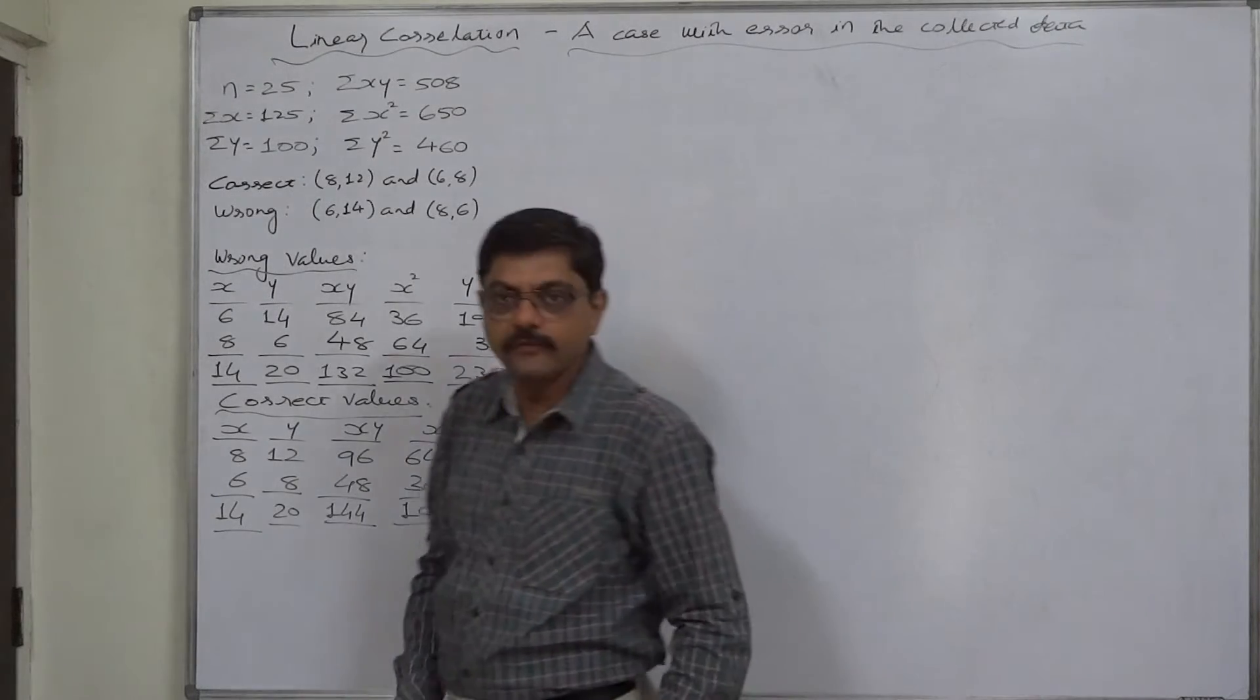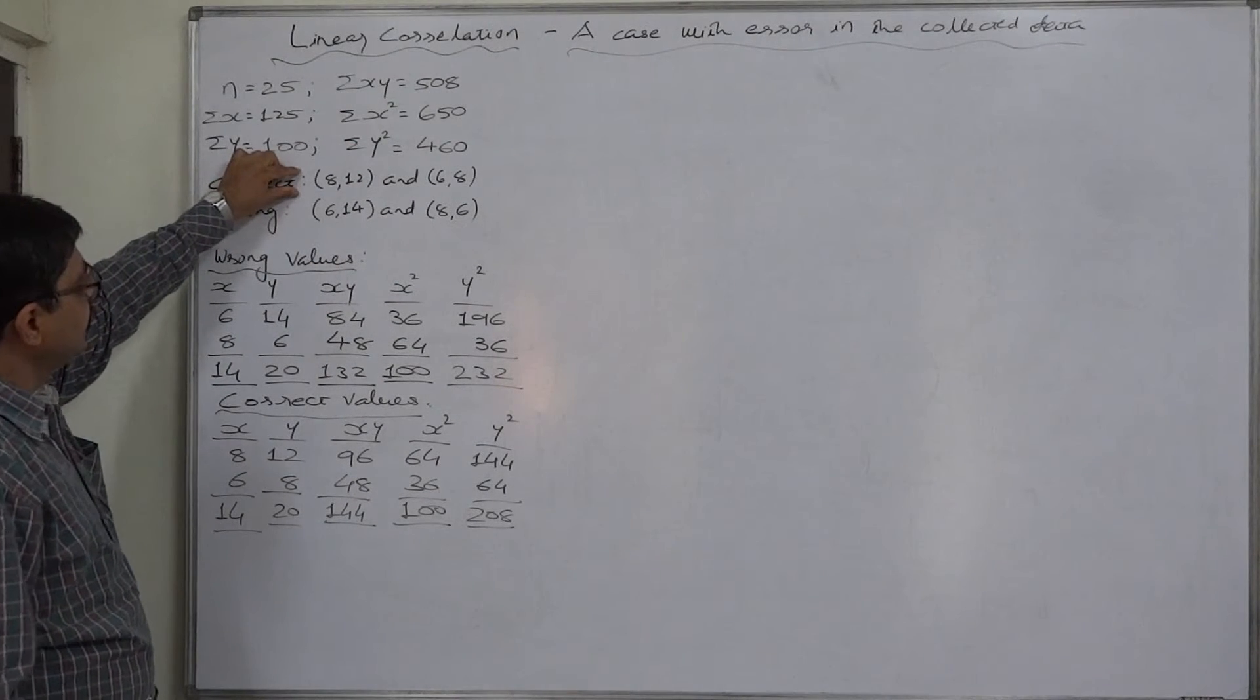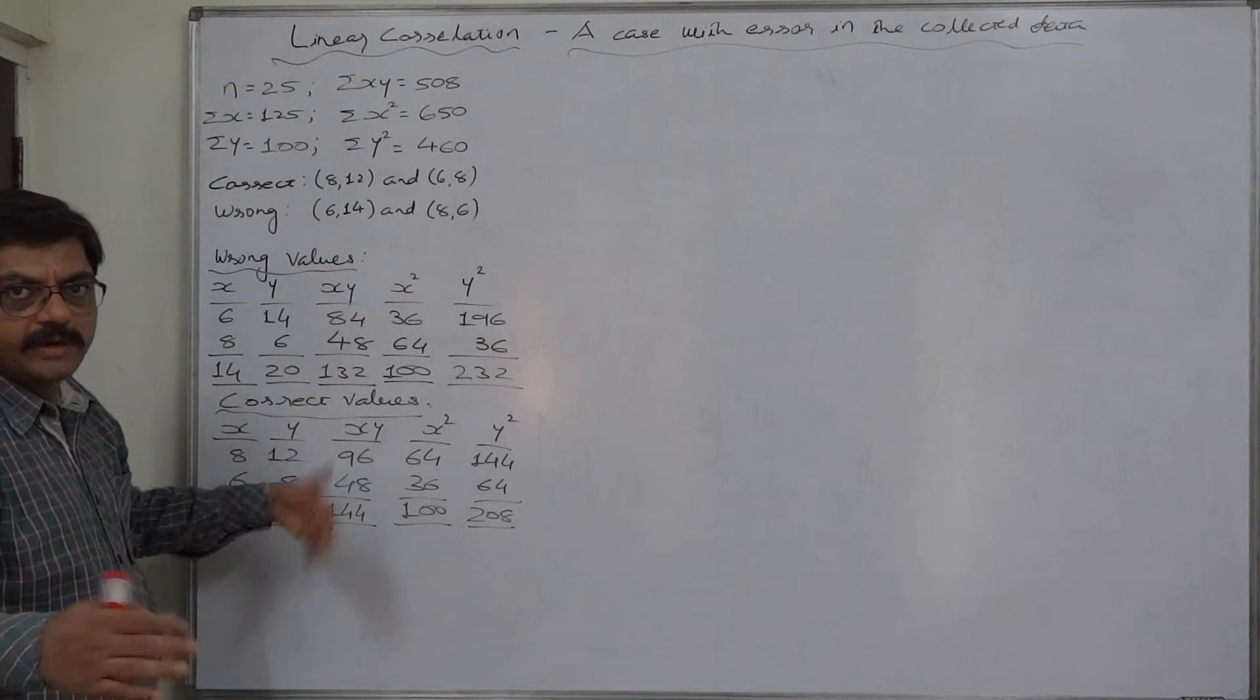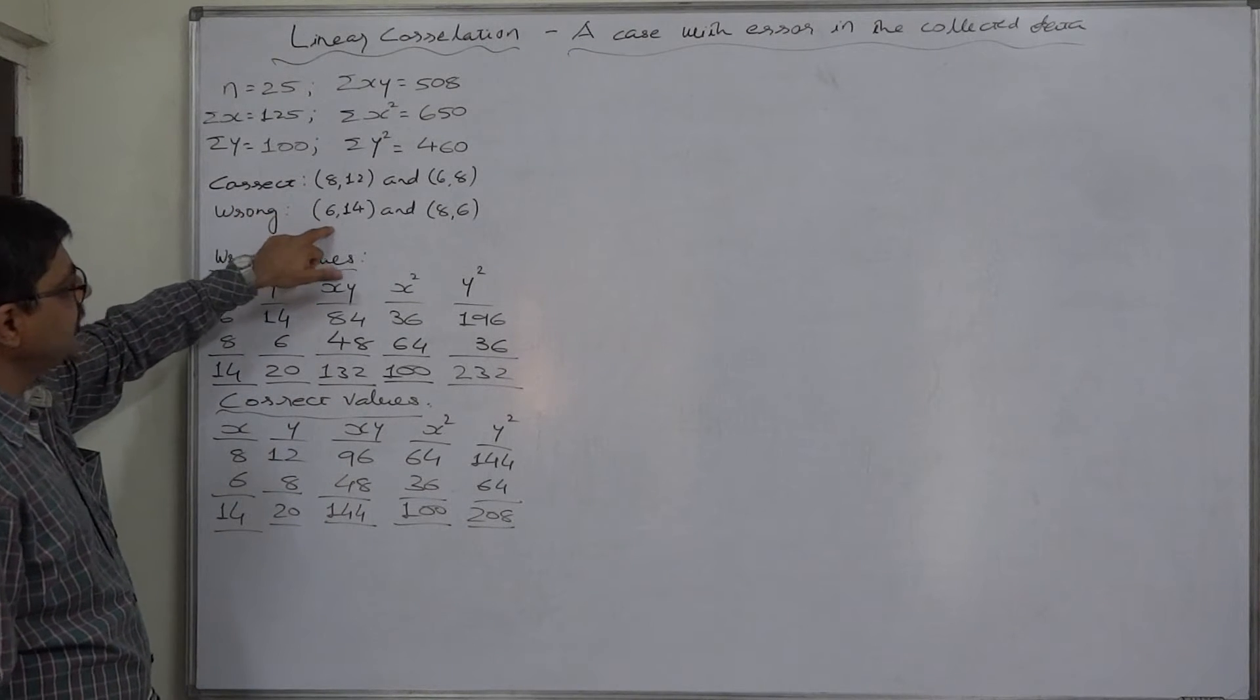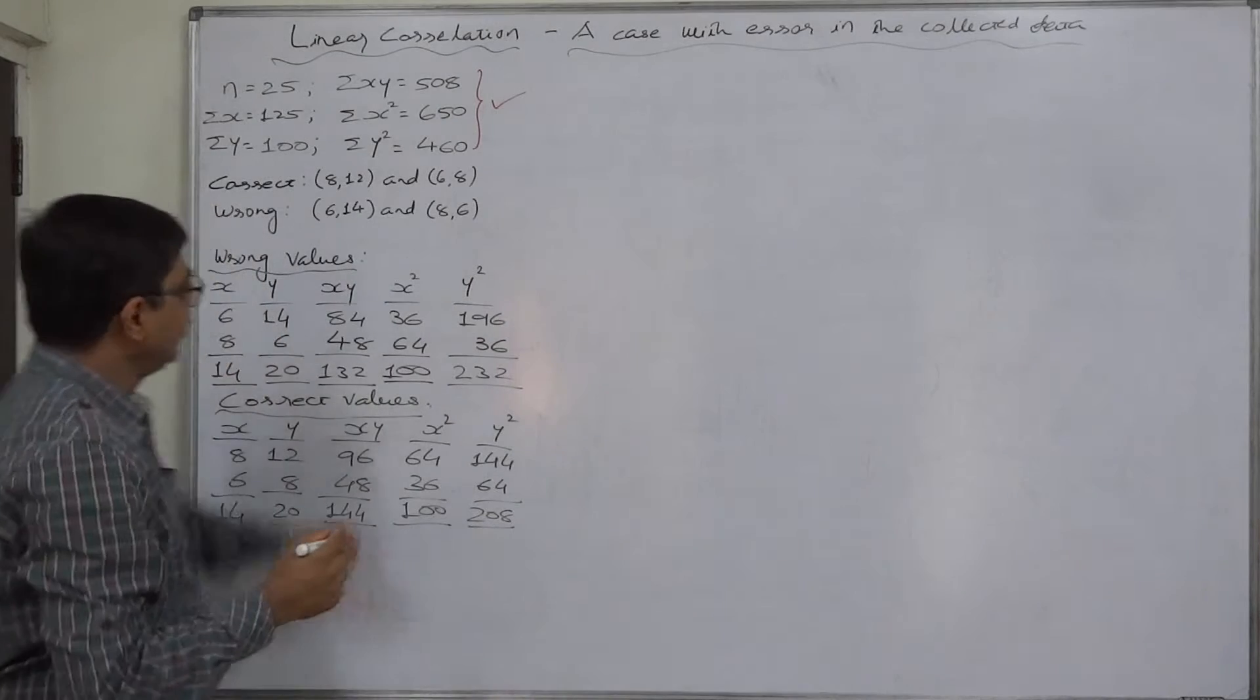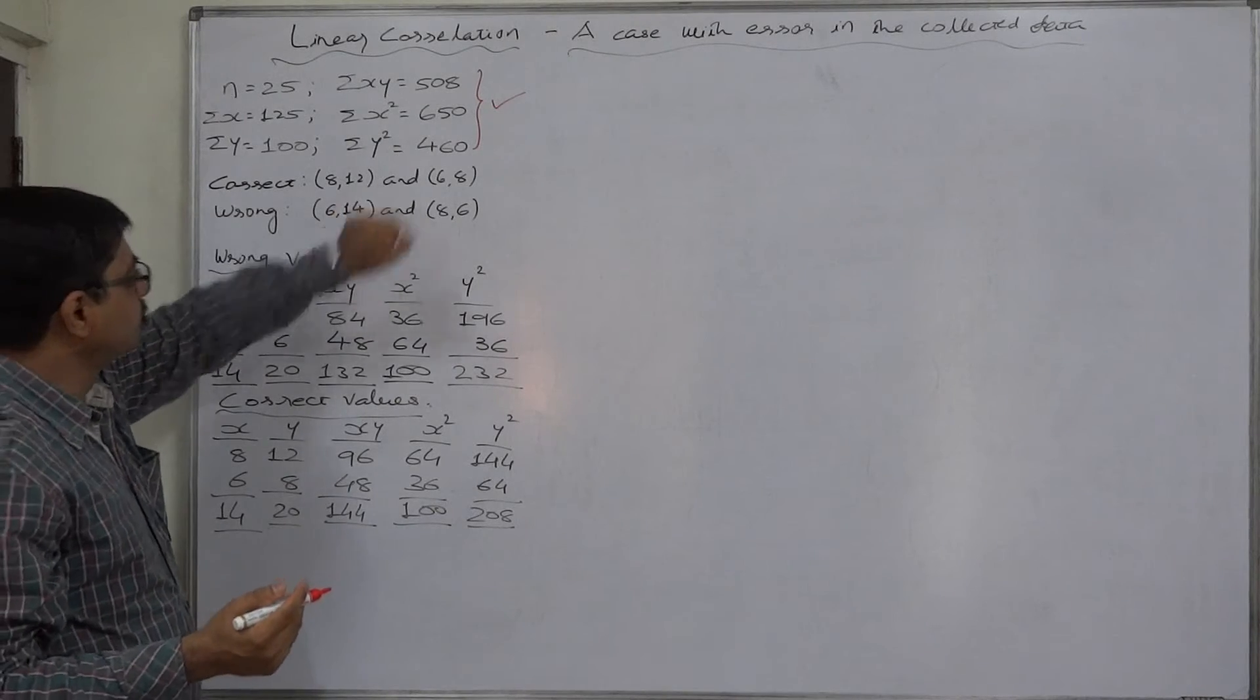Determine the correct value of correlation coefficient. That means actually the data collected consisted (8,12) and (6,8), but somehow at the time of recording the data, these two pairs were wrongly written as (6,14) and (8,6). That means all these summations are incorrect. They include these values of x and y which are wrong. The summations should include these two values.